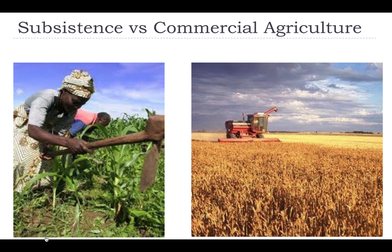Comparing subsistence and commercial farming: subsistence farming uses hand tools, low technology, with land intensively used requiring a lot of human labor. It is typically family-based and small in size, and the food is consumed on the land. Commercial farming, by contrast, involves very large plots of land, advanced technology — such as a combine — and far fewer people working as farmers.